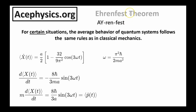Finally, I want to mention the Ehrenfest theorem, which I'll discuss more in the next problem. It states that in certain situations, the average behavior of a quantum system follows the same rules as classical mechanics. If I take the derivative of the average position with respect to time, that gives an average velocity, and multiplying by m gives an average momentum — and this expression matches exactly what we obtained from the tedious integral in Part E.